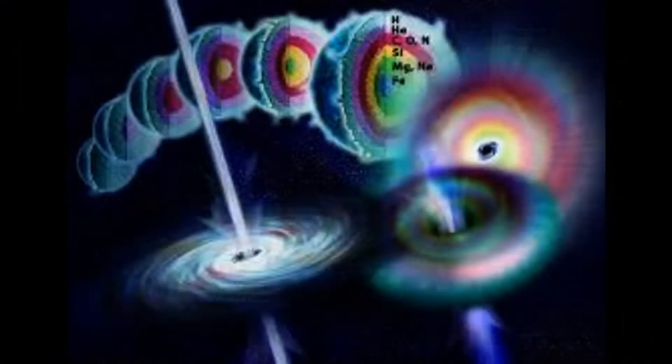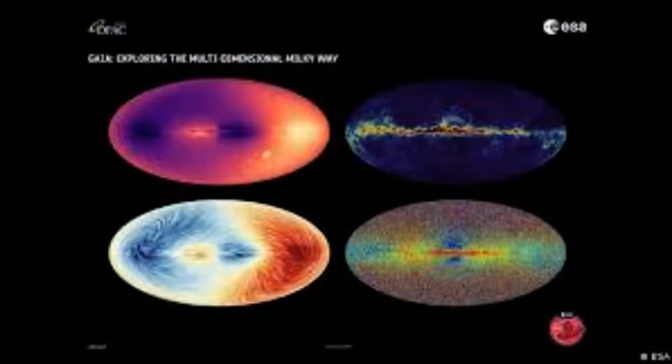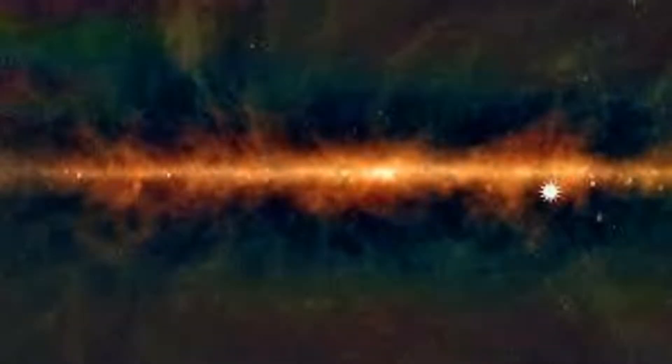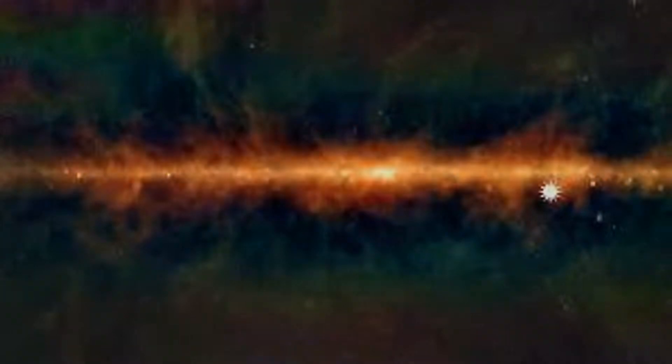Although the researchers are unsure about the source, they suspect the signal stems from a radio pulsar or a magnetar, both of which are types of neutron stars - extremely dense, rapidly spinning collapsed cores of giant stars.